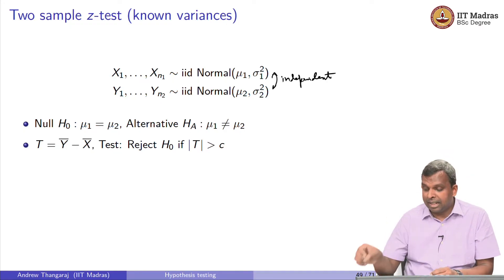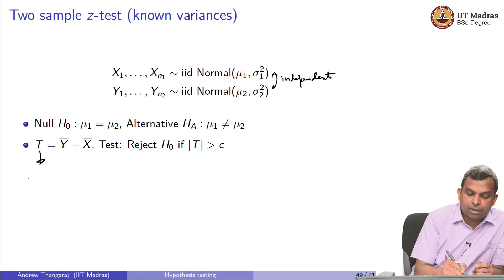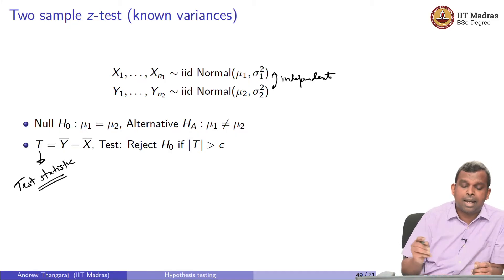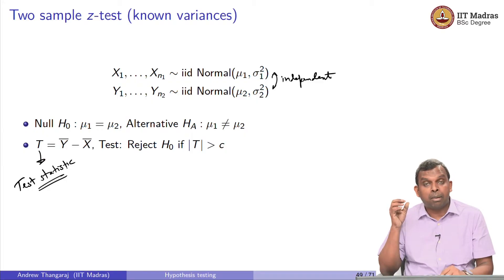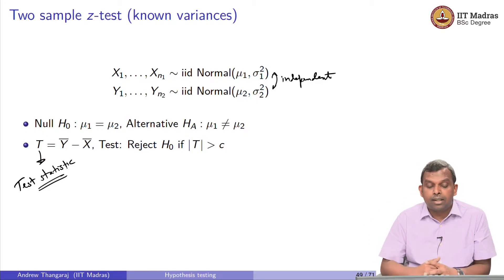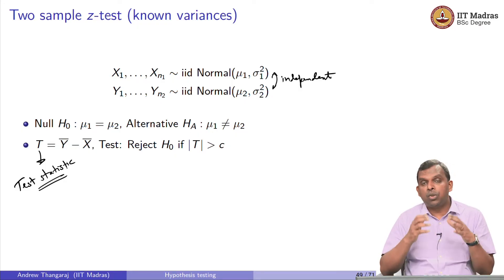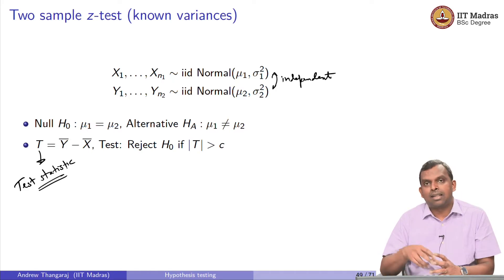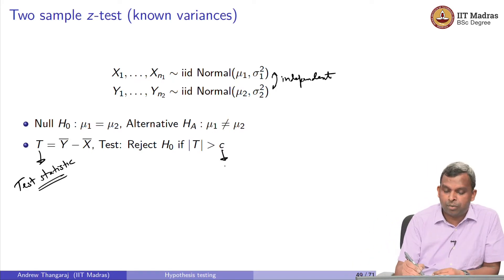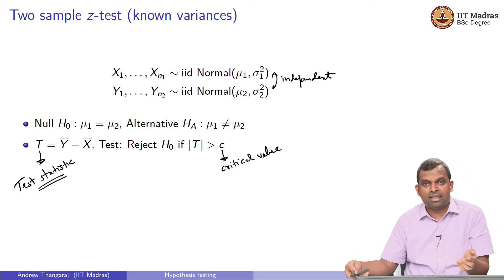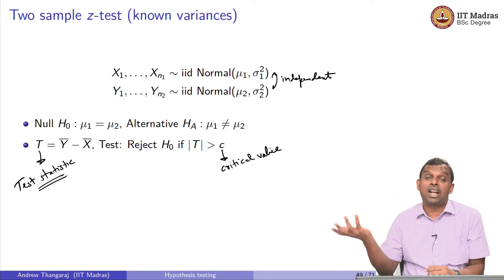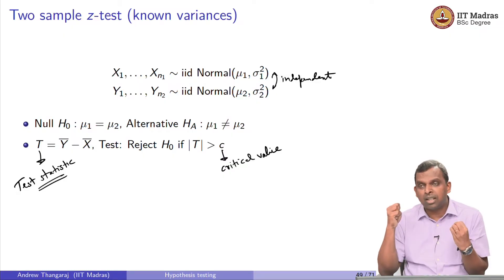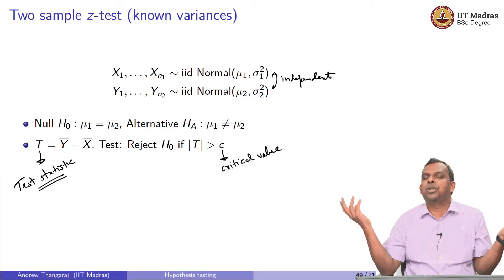I am going to use the test statistic T = y-bar minus x-bar. This is a very reasonable test statistic to measure the sample means. Since it is two-sided, I am going to reject the null — which says mu 1 equals mu 2 — if the absolute value of T is greater than some critical value c. We define a test statistic for which we can predict the distribution ahead of time. That is the most important thing.